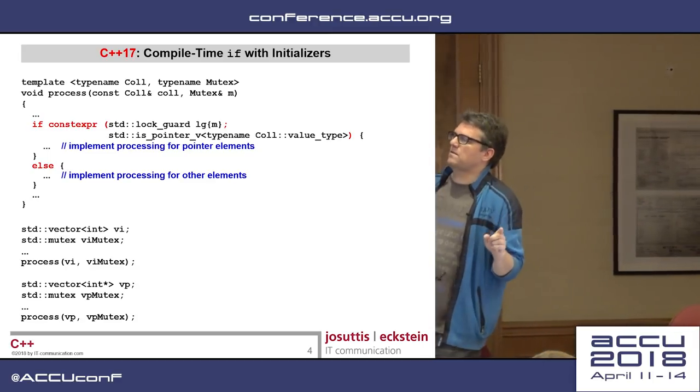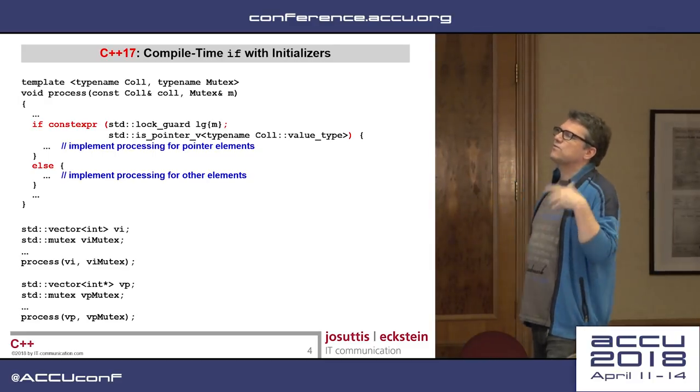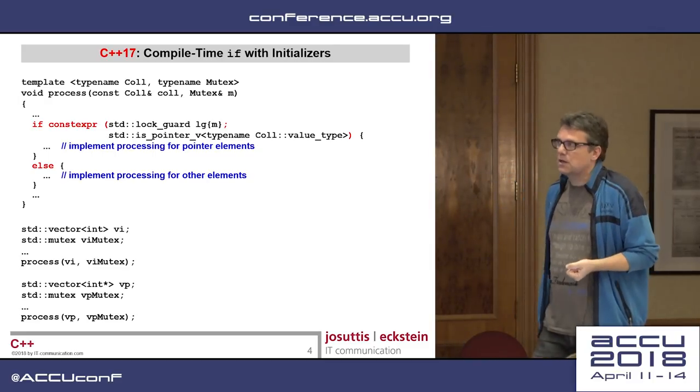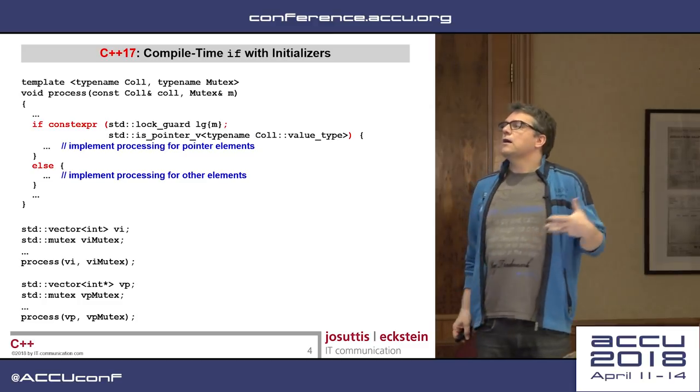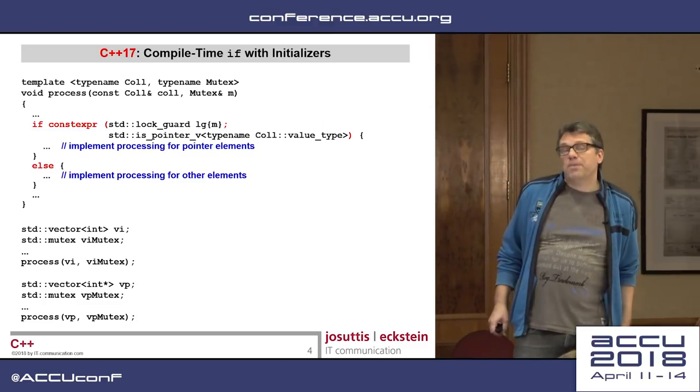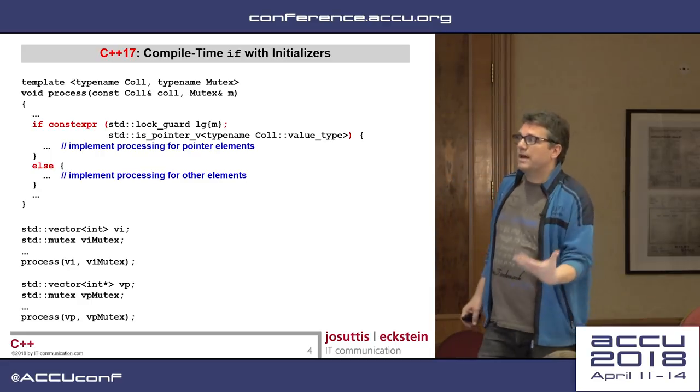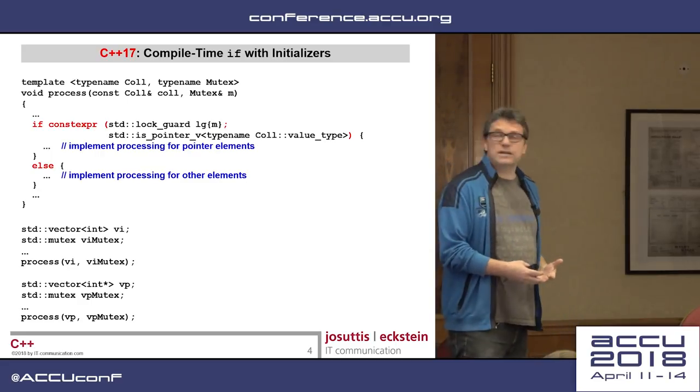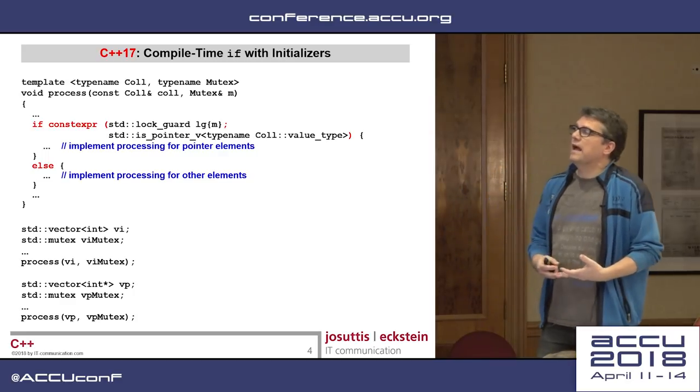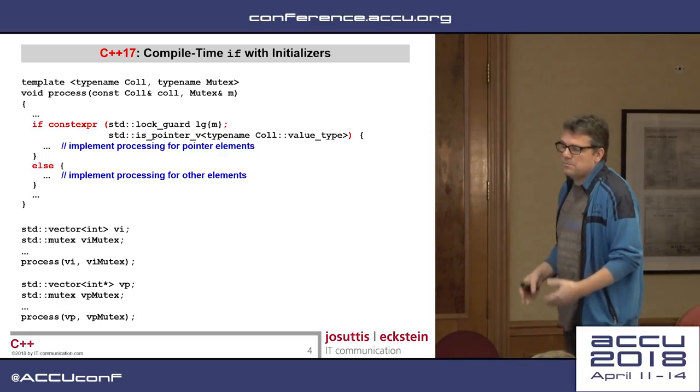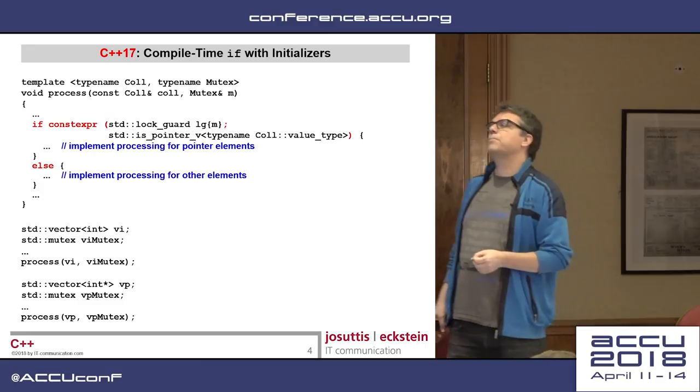So look at this. We can now say here I have two different implementations for how I wanted to deal with the collection, depending on whether the elements are pointers or not. So in the then case, I have the implementation for pointers. And in the else case, I have the other implementation. And only one of them gets compiled.